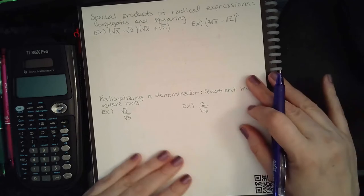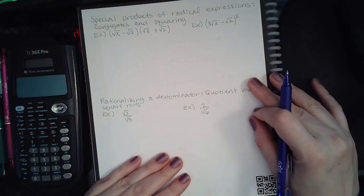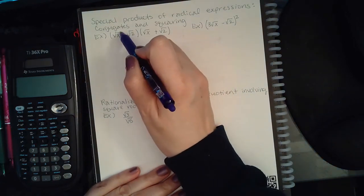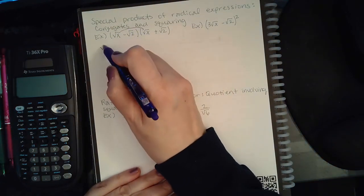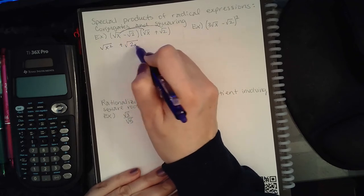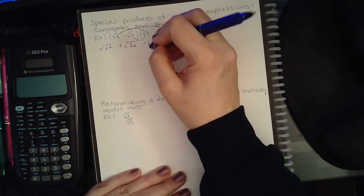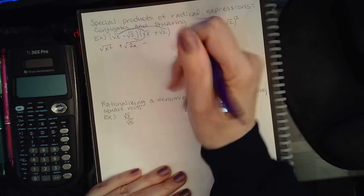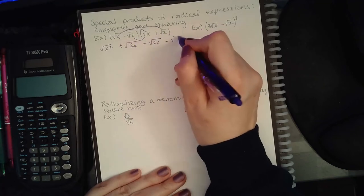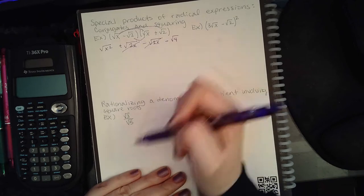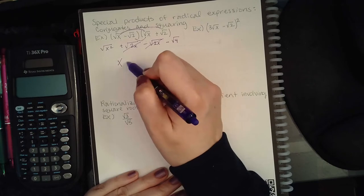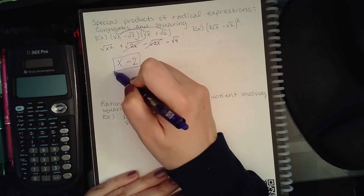This covers special products of radical expressions — conjugates and squaring. We're going to FOIL this out: this times this gives square root of x squared, this times that gives positive square root of 2x, inside times inside gives negative square root of 2x, and inside times inside gives 4. The positive and negative square root of 2x terms cancel. Square root of x squared is x, square root of 4 is 2, and these are not like terms.